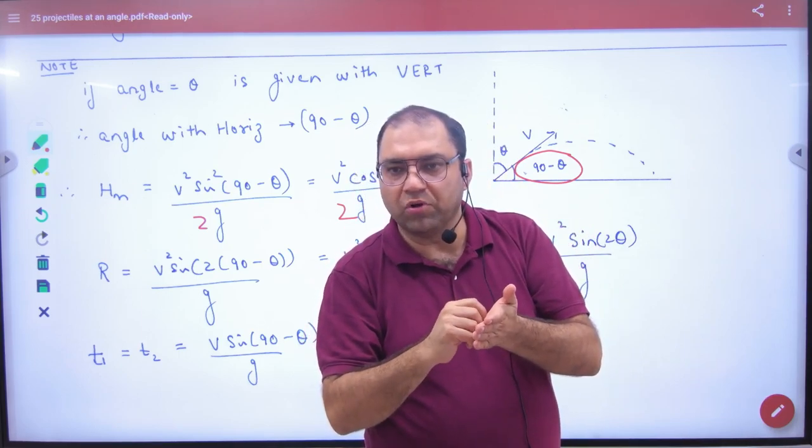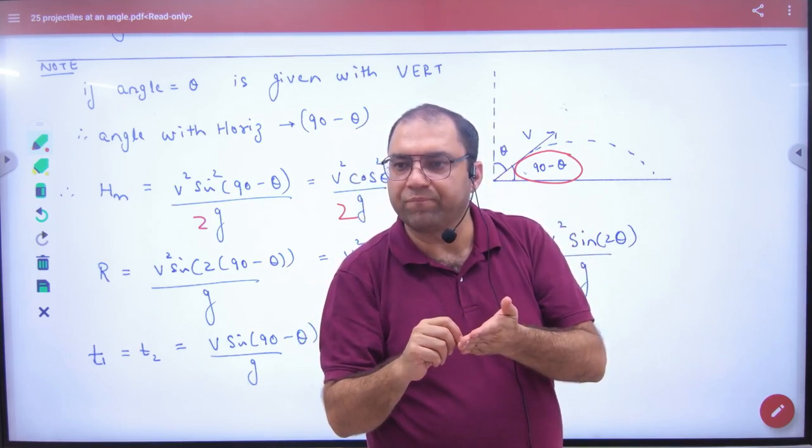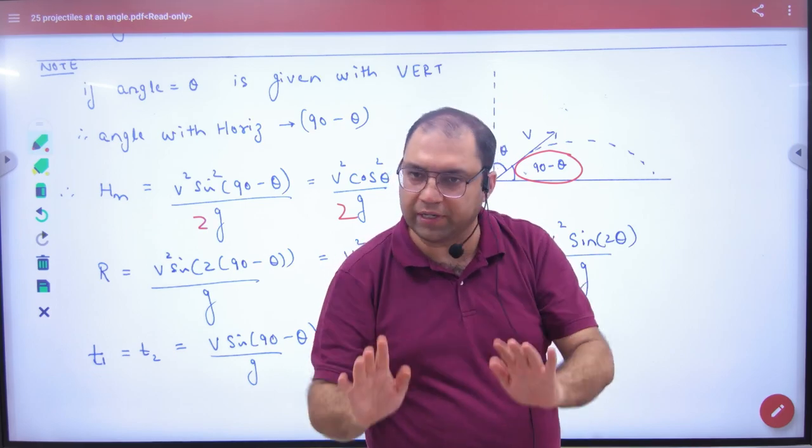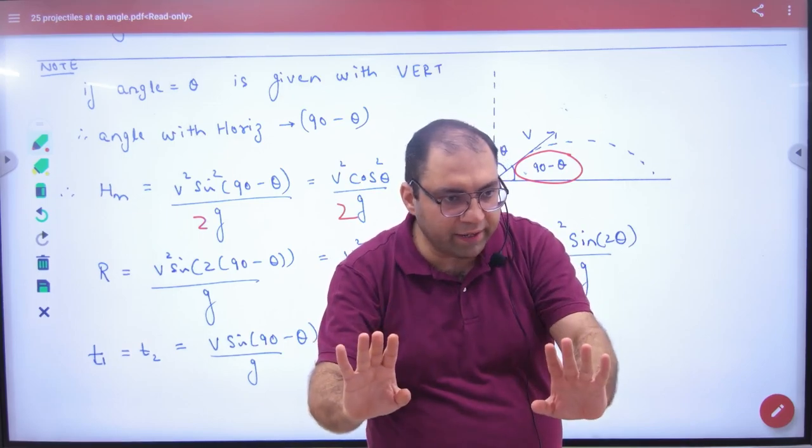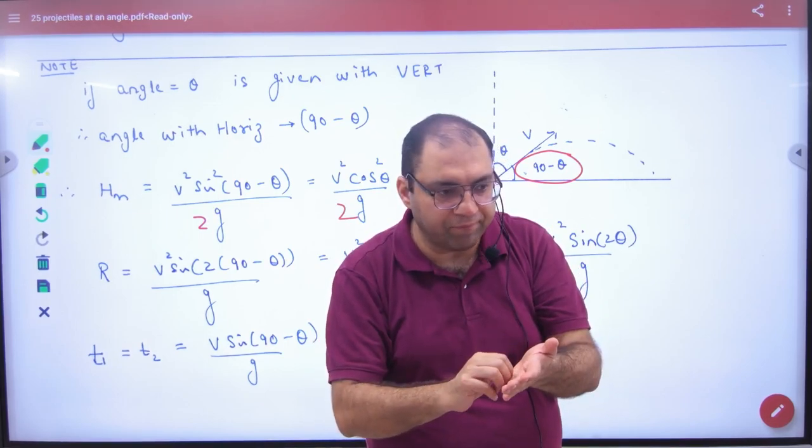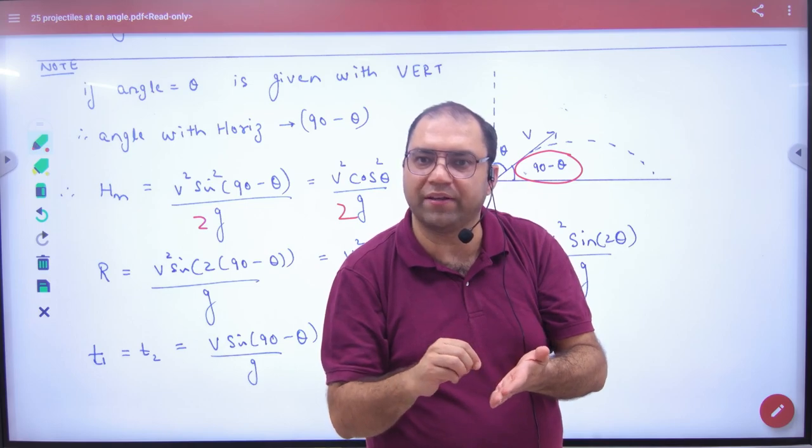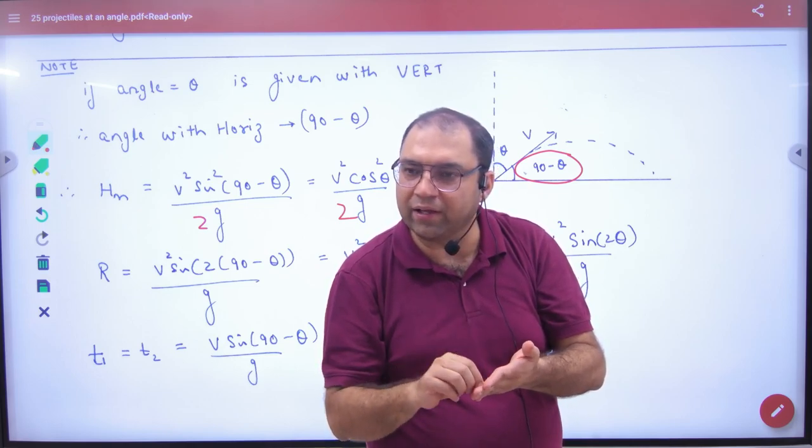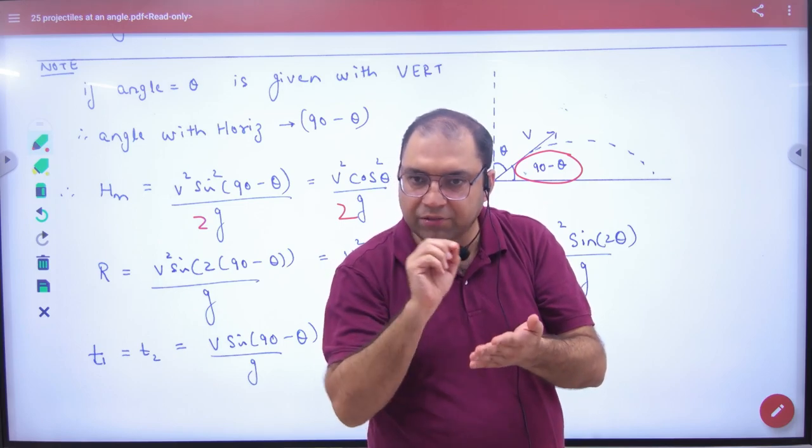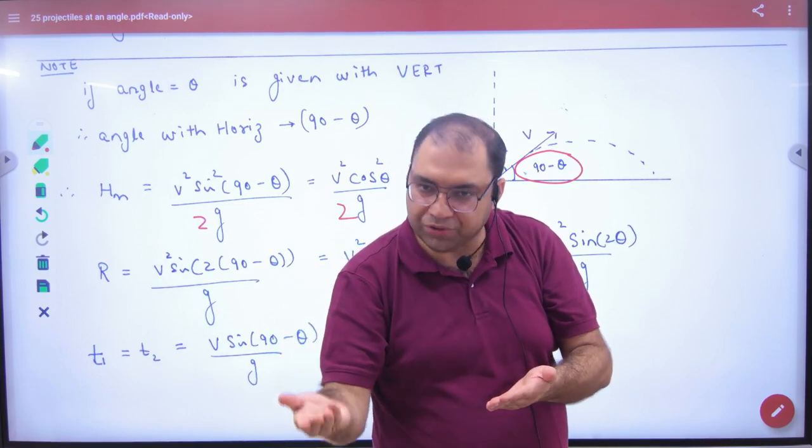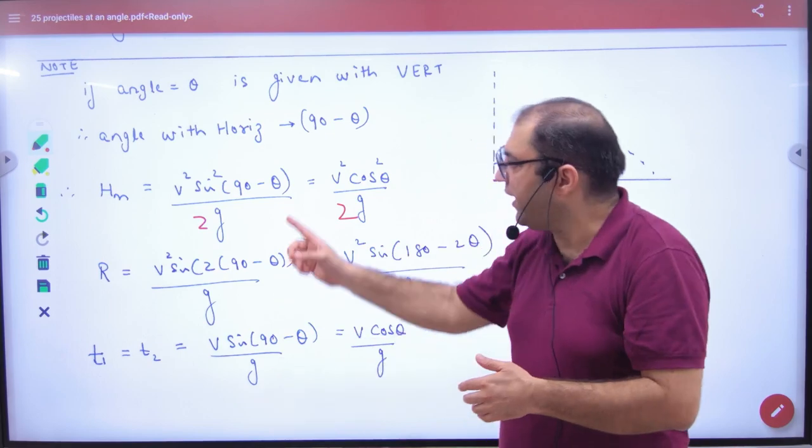Let us suppose projectile is projected at an angle of theta with horizontal, like we do normal. Maximum height prove. The formula is wrong. Then we will write a note again. Here, in this question, it is given that theta angle is with vertical. So replace theta with 90 minus theta. So in maximum height, we will do this extra step.